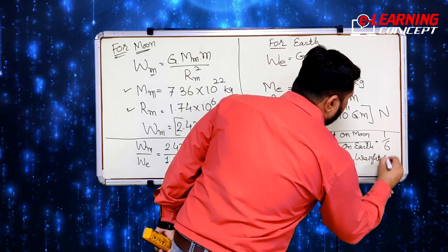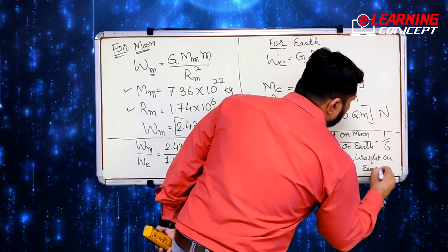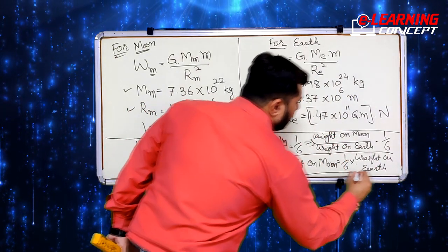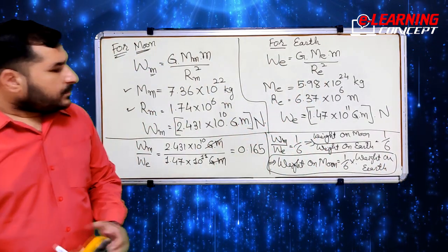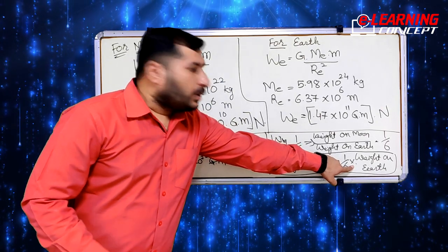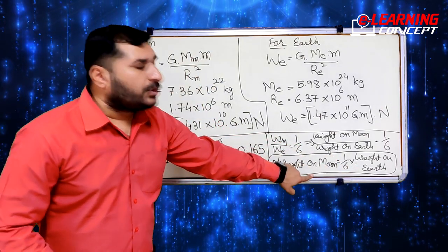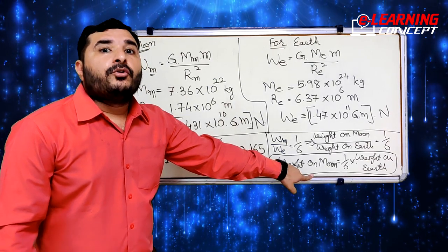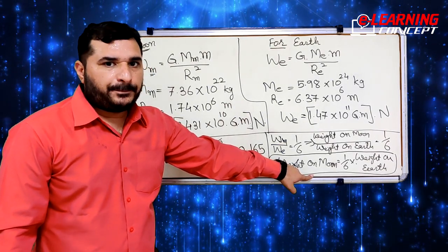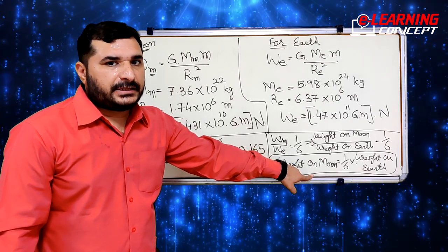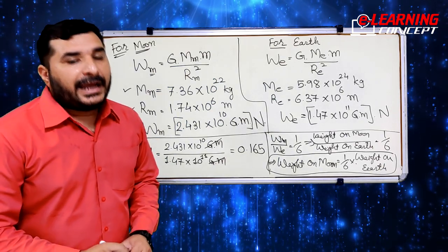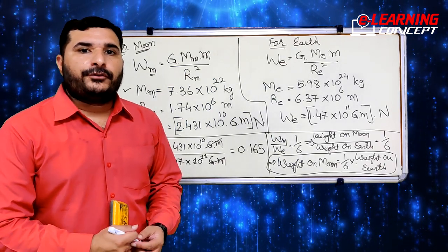If we write the weight of an object on the Moon, we get W_m = (1/6) × weight of an object on Earth. So the complete comparison is: the gravitational force of the Moon compared to Earth is 1/6. This means that the gravitational force of the Moon is weak as compared to Earth's gravitational force.